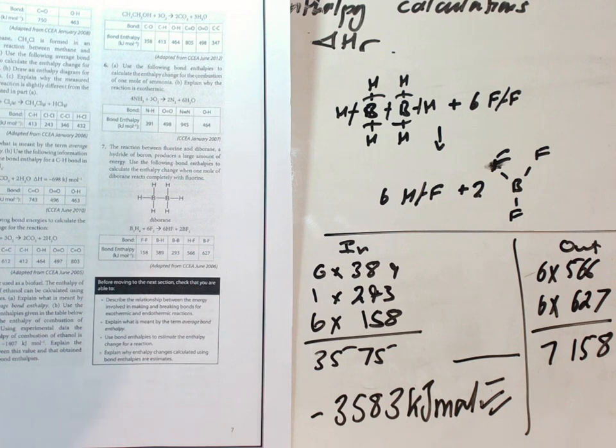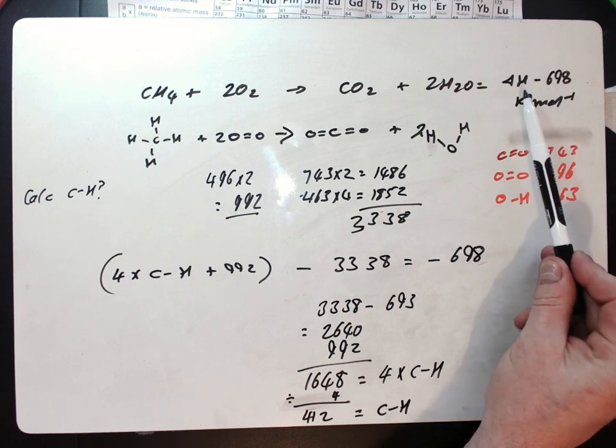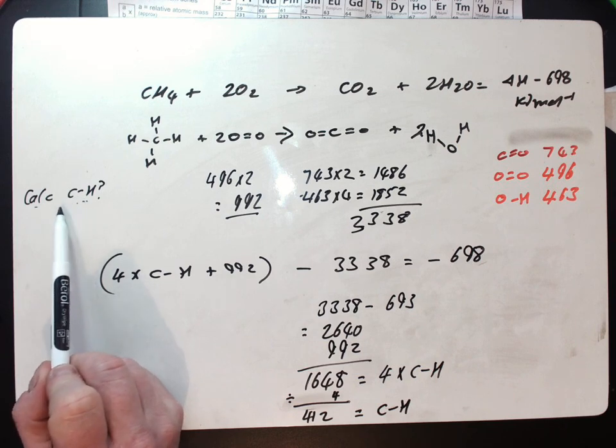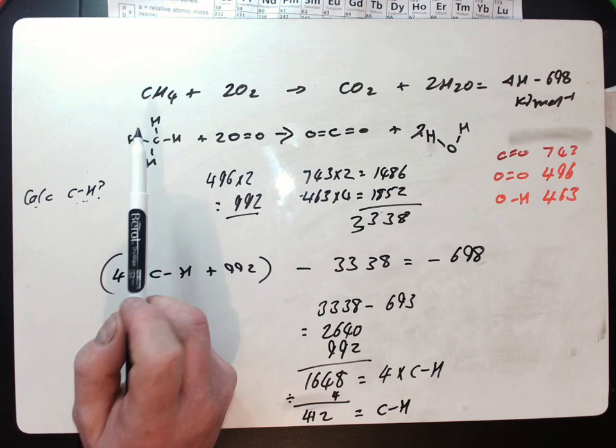Just one more type here, a slight variation on the question we were asked. We've been given this combustion equation. This time we've been given the delta H. We've been asked to calculate the mean bond enthalpy of a carbon-hydrogen bond. So how do we do that? We've been given all the information. Of course, we haven't been given this.